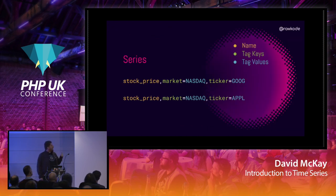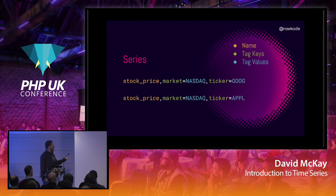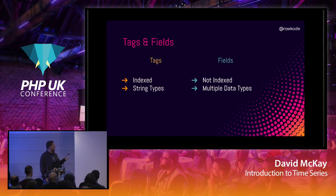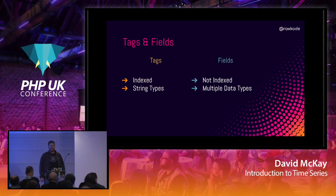A series is defined by its tag set being the same. Even though two entries both have NASDAQ as the market, they are different series because the ticker differs. Tags are always indexed, which means they can only be strings — but that makes querying a specific series very fast. Fields are not indexed but support multiple data types: strings, integers, booleans. Doing aggregations across fields can be slow, so generally you always filter by tag.